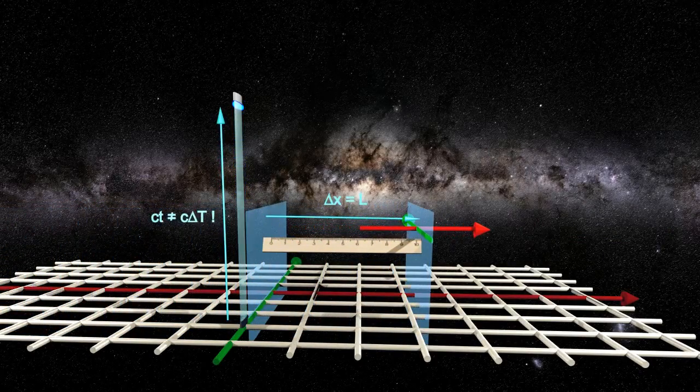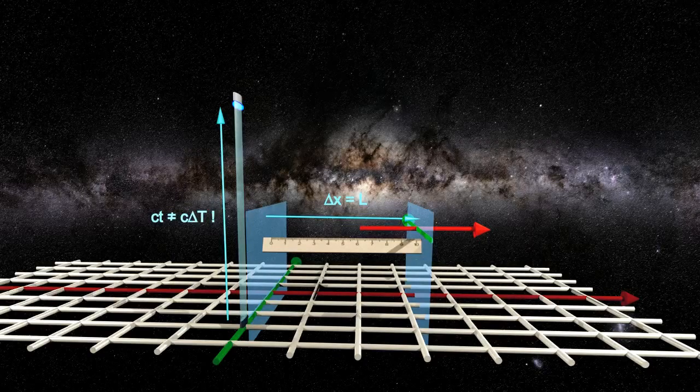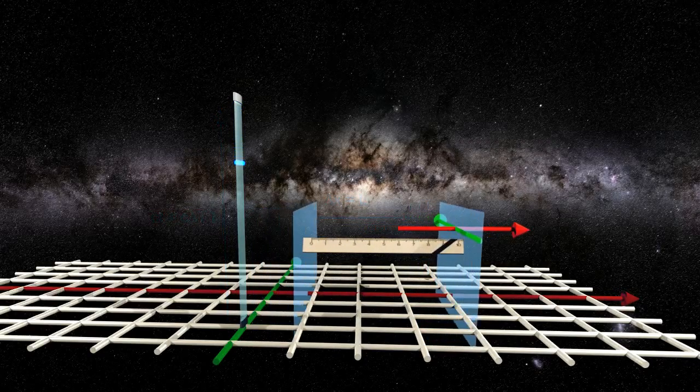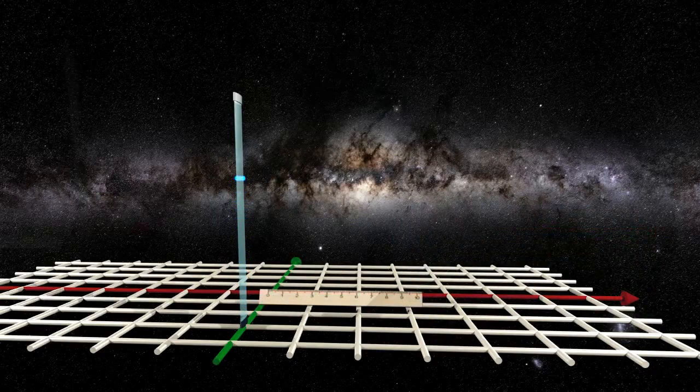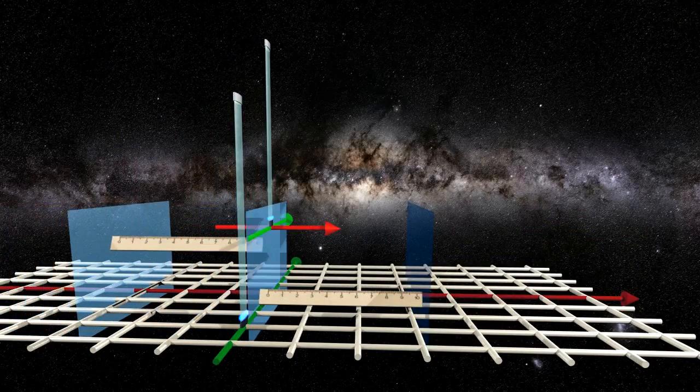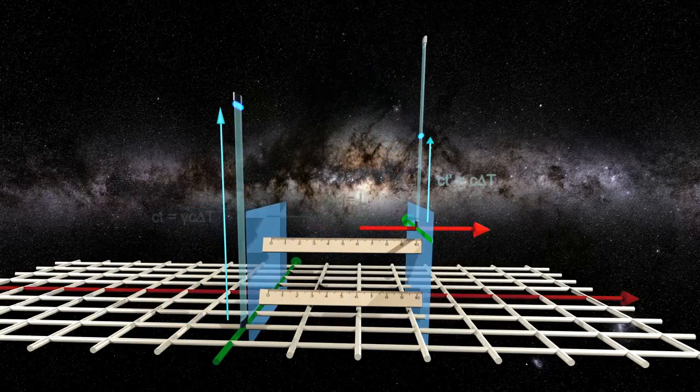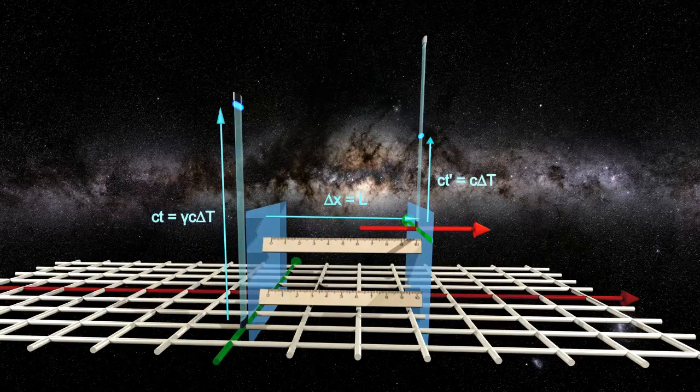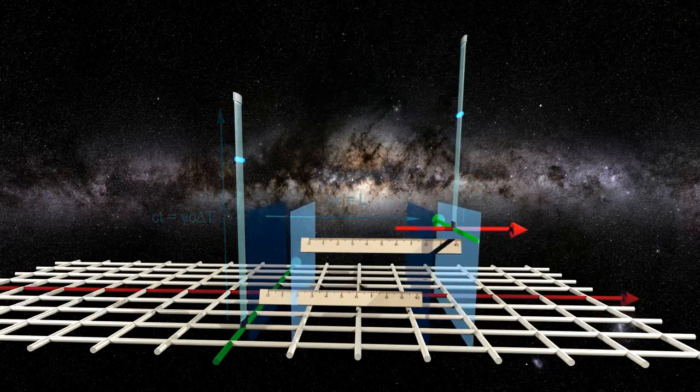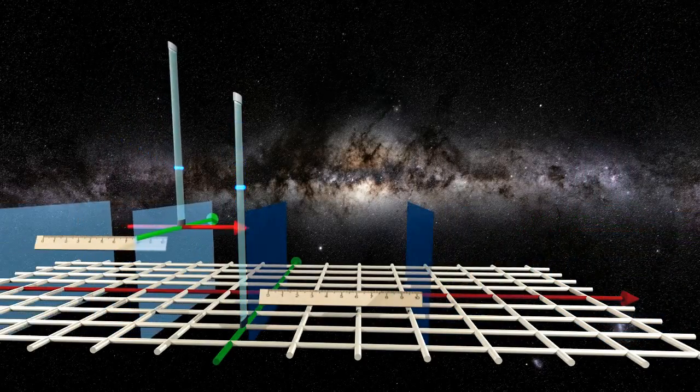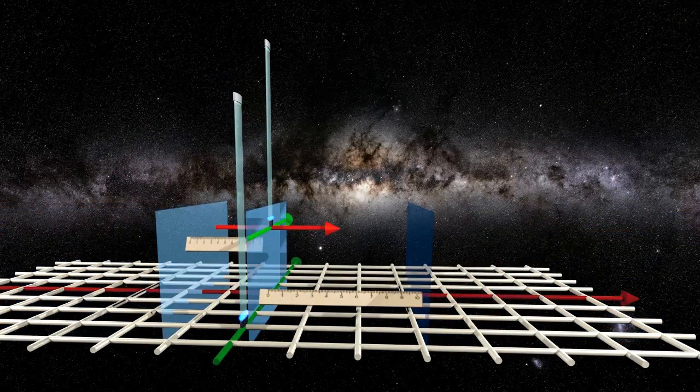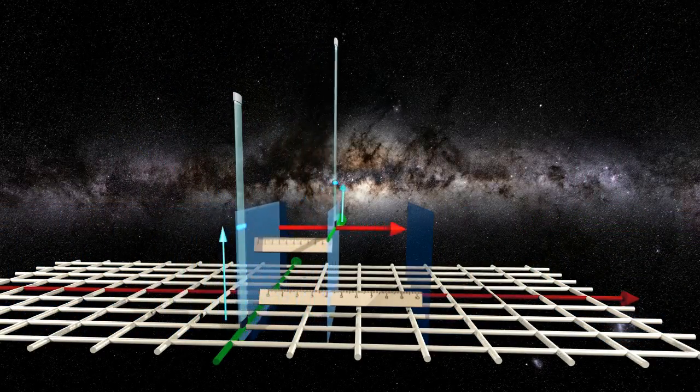But it doesn't. Because the moving clock beats time slower than the stationary clock by the factor of time dilation. If the two durations are to be equal, the moving ruler must appear shorter to the stationary clock by exactly the same factor of time dilation.